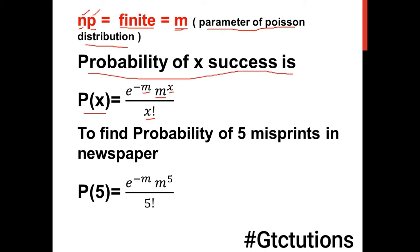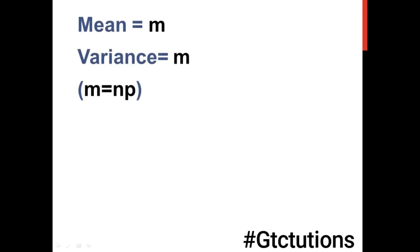For example, to find the probability of five misprints in a given newspaper: P(5) = e raised to power minus m, into m raised to power 5, divided by 5 factorial. Important to remember: in poison distribution, mean equals m, variance also equals m, and standard deviation is root of m.